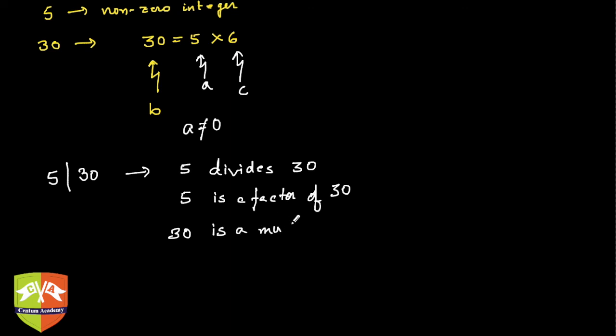Or we say 30 is a multiple of 5, because I have another integer 6 which when multiplied with 5 gives 30.